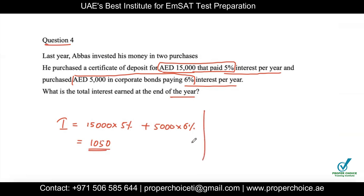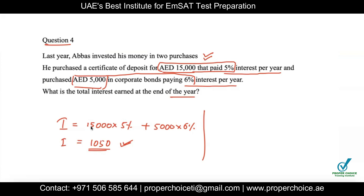So 1,050 dirhams is the total interest Abbas earned. Note: if the question asked for the total amount returned after one year, you would add back the initial deposits — 15,000 + 5,000 + 1,050 = 21,050. But this question only asks for interest. These are typical percentage question types in the exam; there are many varieties, so make sure you have a complete understanding of percentages. That's it for today's lesson — please like, share, and subscribe.